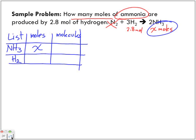How many moles of hydrogen? 2.8. But now for the molecules part, we're going to take this ratio here - it's a three to two ratio. So we have how many molecules of hydrogen? Three. How many of ammonia? Two.